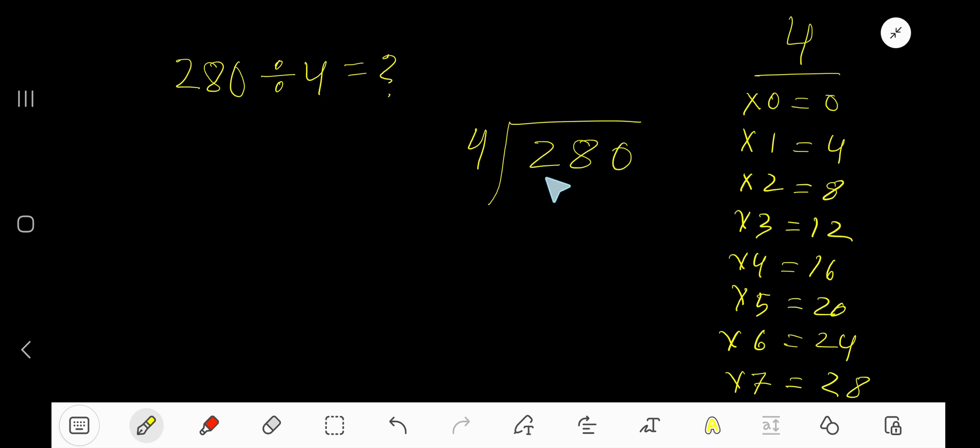4 goes into 2 how many times? 0 times, since 2 is less than 4. 0 times 4 which is 0. Subtract, then bring down this 8. 4 goes into 28 how many times?